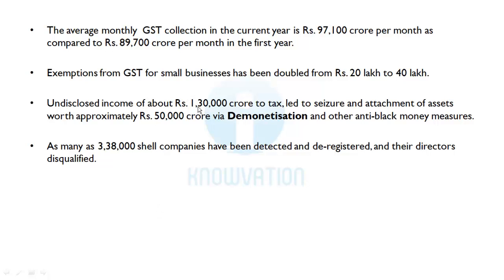Undisclosed income of about Rs. 1,30,000 crore was brought to tax, leading to seizure and attachment of assets worth approximately Rs. 50,000 crore through demonetization and other anti-black money measures. As many as 3,38,000 shell companies — which are used to transfer and convert money into black money without actually functioning — have been detected and deregistered.